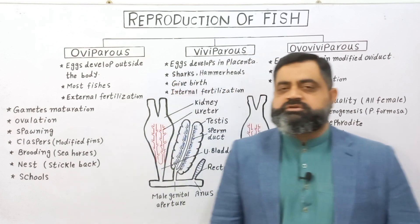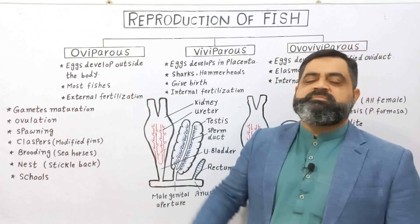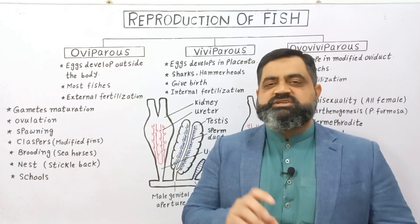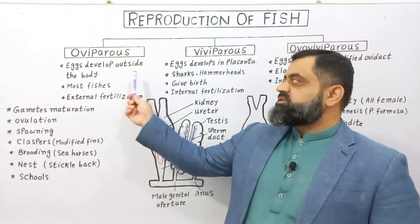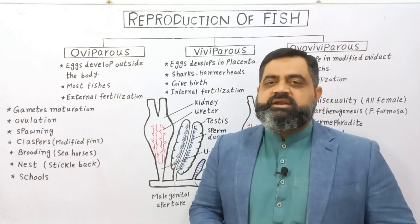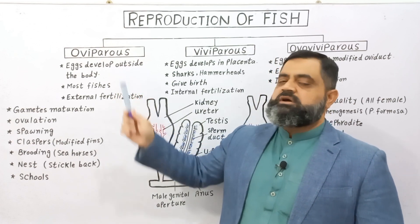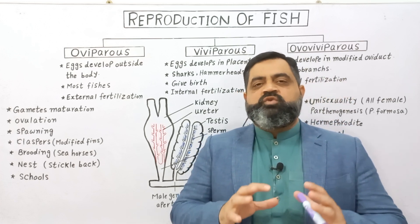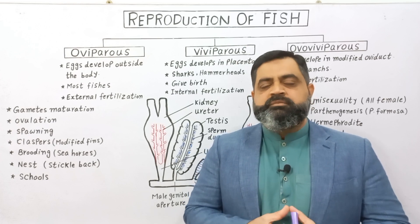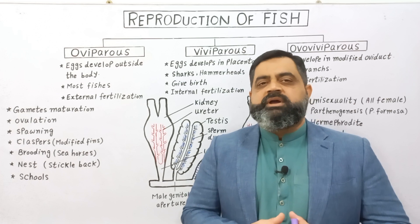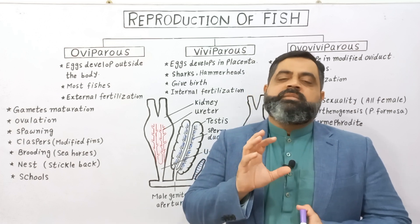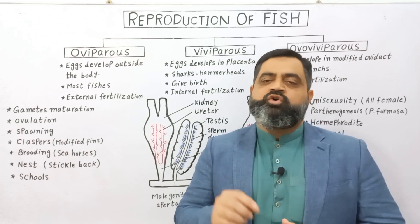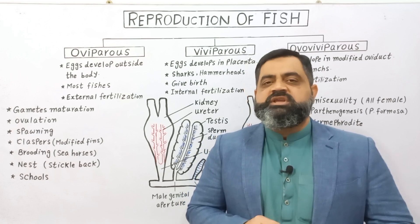The first method of reproduction is oviparity, or oviparous fish. Oviparous fish are usually bony fishes which live in fresh and marine water. These fishes produce eggs, and these eggs are developed outside the female body, inside the water. Usually eggs are laid in very large quantity because so many eggs are wasted — eaten by predators — and some eggs are exposed to fungal or bacterial infection.